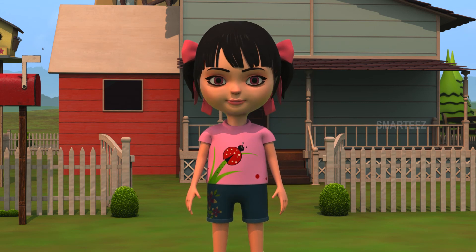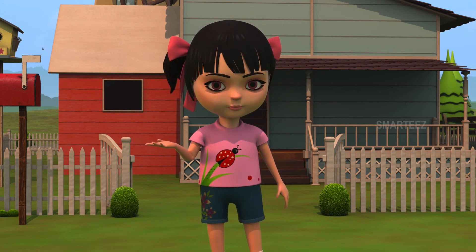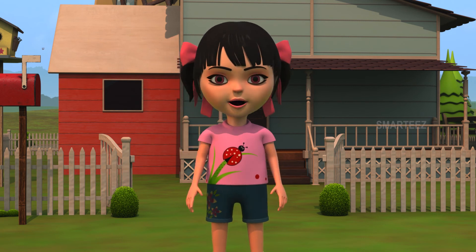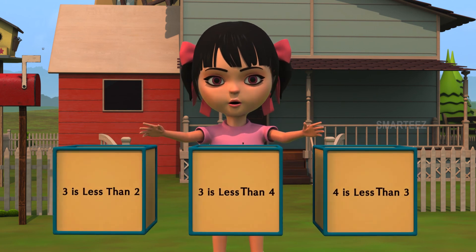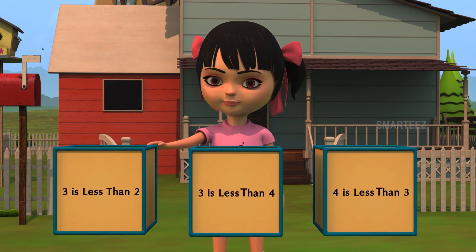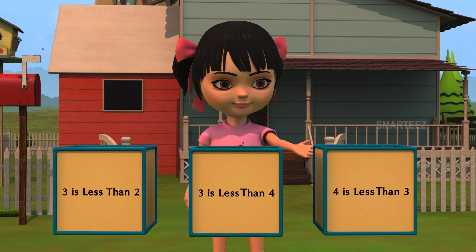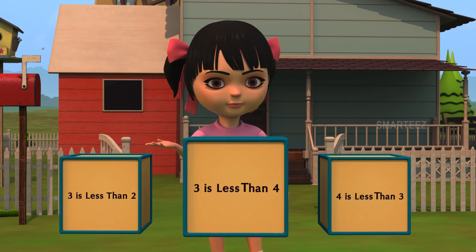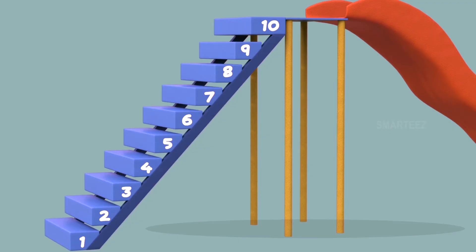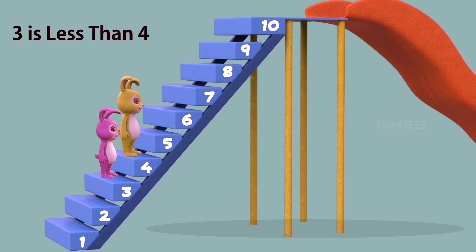Okay, let's see another one. When the music stopped the second time, yellow bunny was on step 4 and pink bunny was on step 3. Which one is less than the other? Is 3 less than 2? Or is 3 less than 4? Or is 4 less than 3? Yes, 3 is less than 4. Let's take a look. When the music stopped, the yellow bunny was on step number 4 and the pink bunny was on step number 3. We see step number 3 is lower than step number 4. We call this as 3 is less than 4. So, when a number is lower than some other number, we call it as less than the other number.